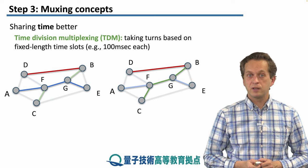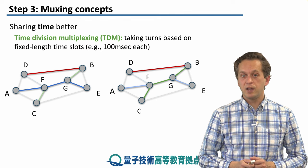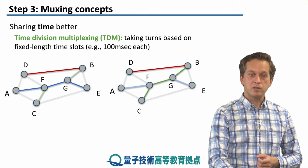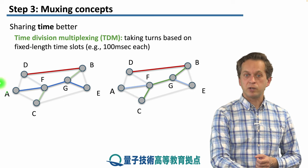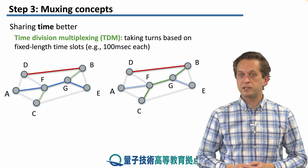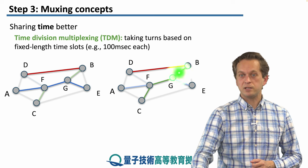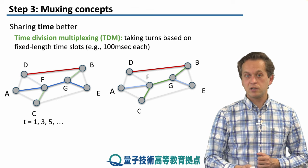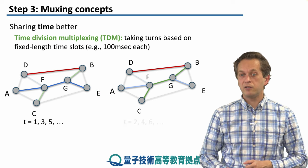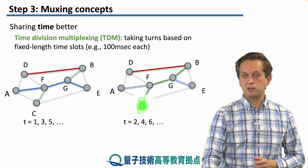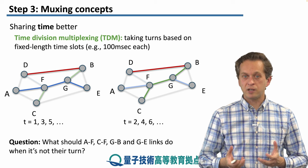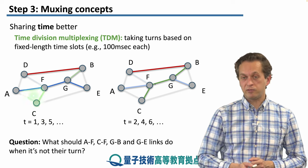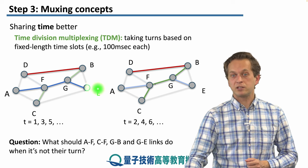A different way of sharing time is time division multiplexing, or TDM. This is when we take turns based on fixed-length time slots — for example, 100 milliseconds each. In the first 100ms slot we satisfy the connection request between A and E. In the second slot we switch to satisfy the request between C and B. Then we switch back to A and E. So for all odd-numbered time slots we take care of A to E, and for even-numbered slots we take care of C to B. The question arises: during an odd time slot, what is C doing? What is the link C-F doing? During even-numbered slots, what is the A-F connection doing?